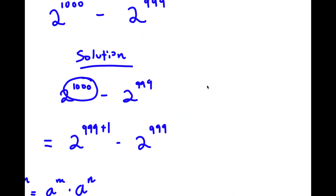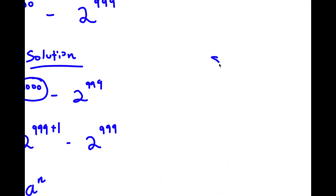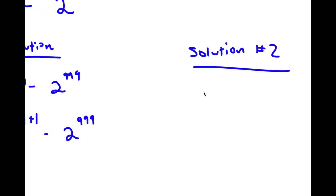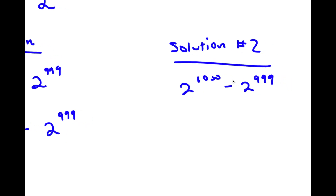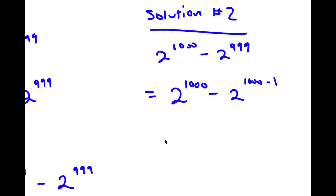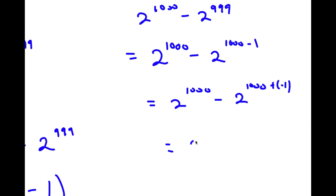Now for another method. Starting with 2^1000 - 2^999, I'll rewrite 999 as 1000 - 1. So I have 2^1000 - 2^(1000 - 1), which is the same as 2^1000 - 2^(1000 + (-1)), which equals 2^1000 - 2^1000 · 2^(-1).